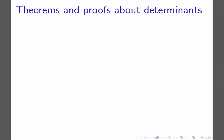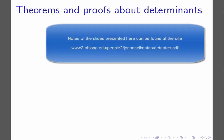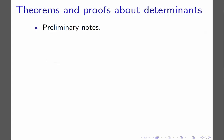This is the first video in a series of videos on theorems and proofs about determinants. I will make the assumption that you have a basic understanding of what a determinant is and how it is computed. In this first video, we're going to cover what I'm calling preliminary notes — some things that we will need in order to understand and prove the results that are coming.